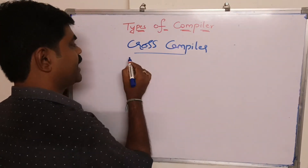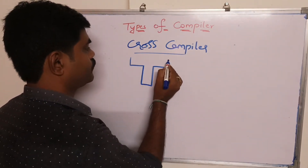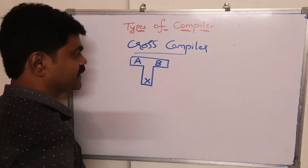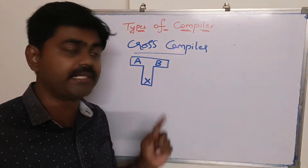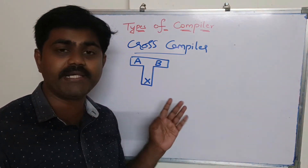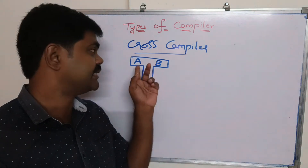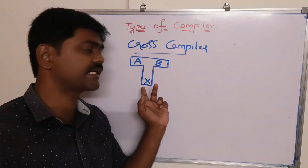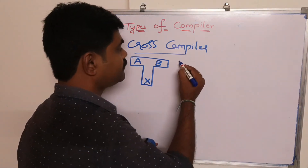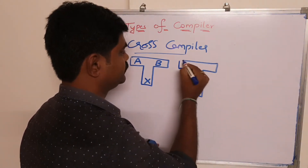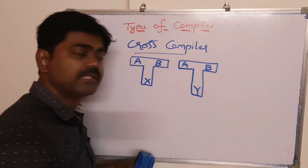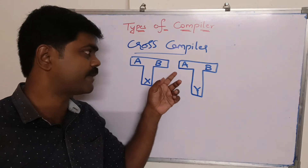Here I have a compiler written as A B X — my source is A, my target is B, and my implementation is X. So this becomes our source, this becomes our target, and this becomes our implementation.